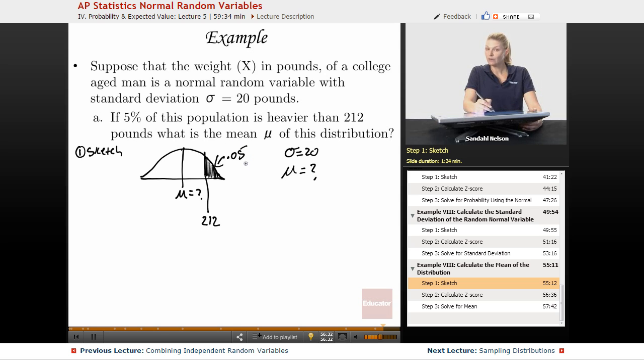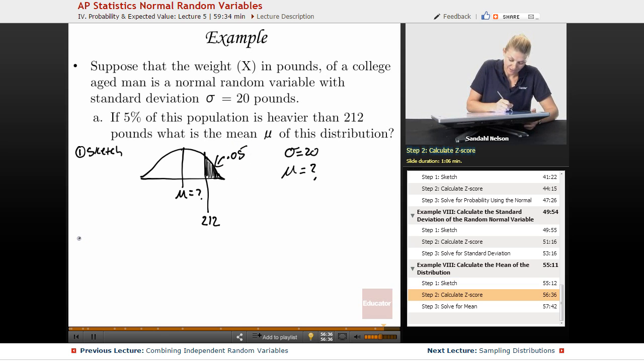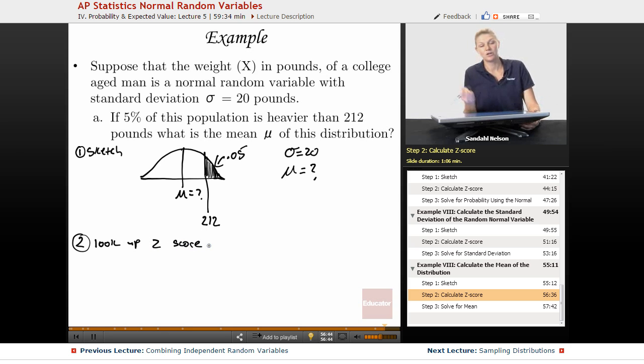Okay, so we see that we do have the area under the curve, we do have the probability, so that means our next step is to look up the z-score. Okay, so we're going to look it up using a calculator. So we'll say inverse norm.